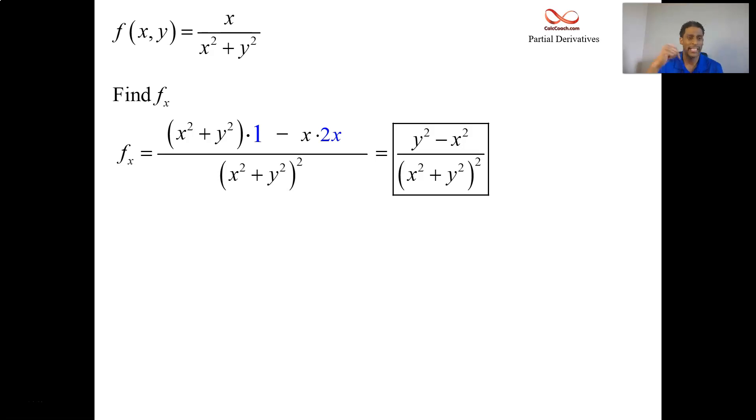And then lastly, we have the y partial. So it starts off like the quotient rule. You bring the numerator up to the denominator. Now you go and take the derivative of the numerator. But the numerator is an x. Its y derivative is zero.